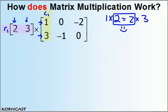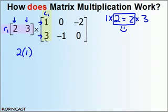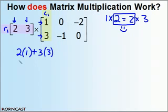We're going to multiply row 1 times column 1. We take the first element in row 1 and multiply it by the first element in column 1 — so 2 times 1. Then the second element in row 1 times the second element in column 1 — so 3 times 3. Because multiplication is really just repeated addition, we add those two products together, giving us the element in row 1, column 1 of our new matrix.